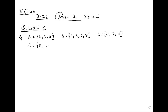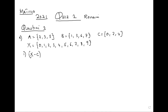So X contains 0, 1, 2, 3, 4, 5, 6, 7, 8, 9 — all numbers less than 10, so we do not include 10. Then part one: we have to find X minus C intersection A minus B.